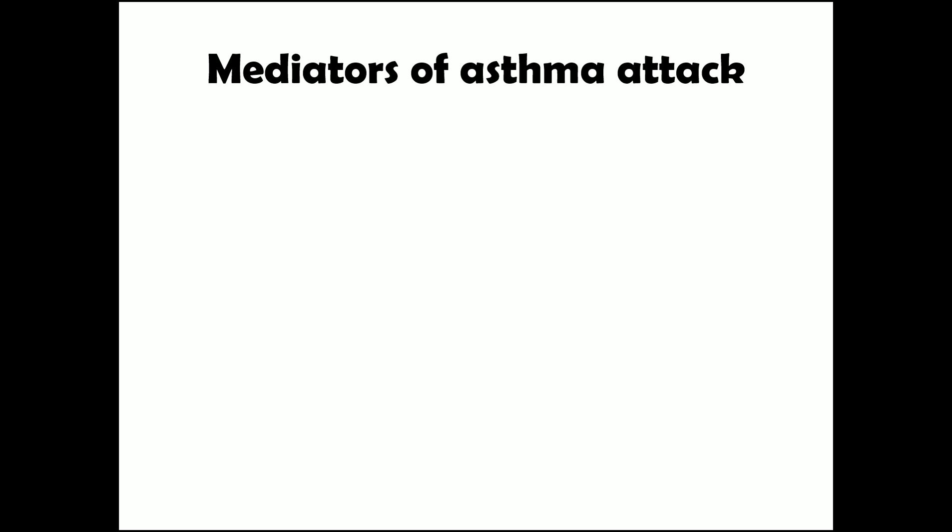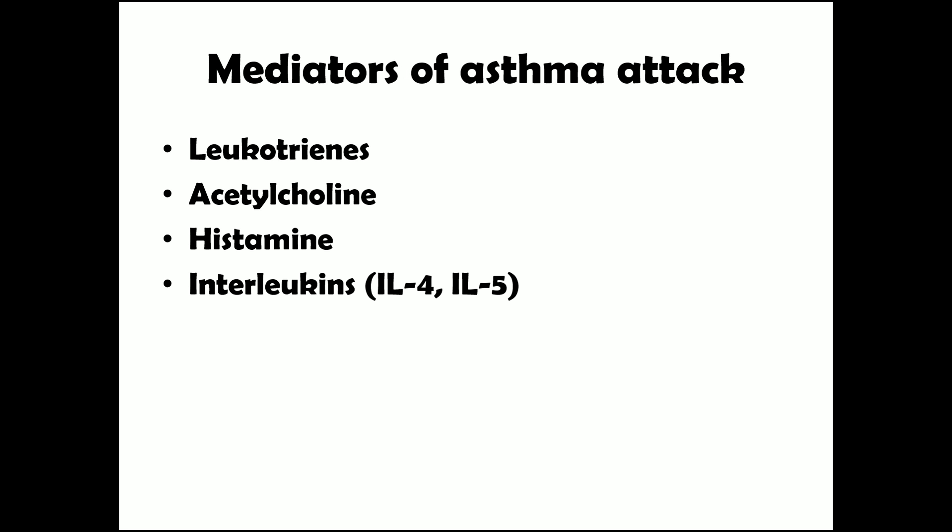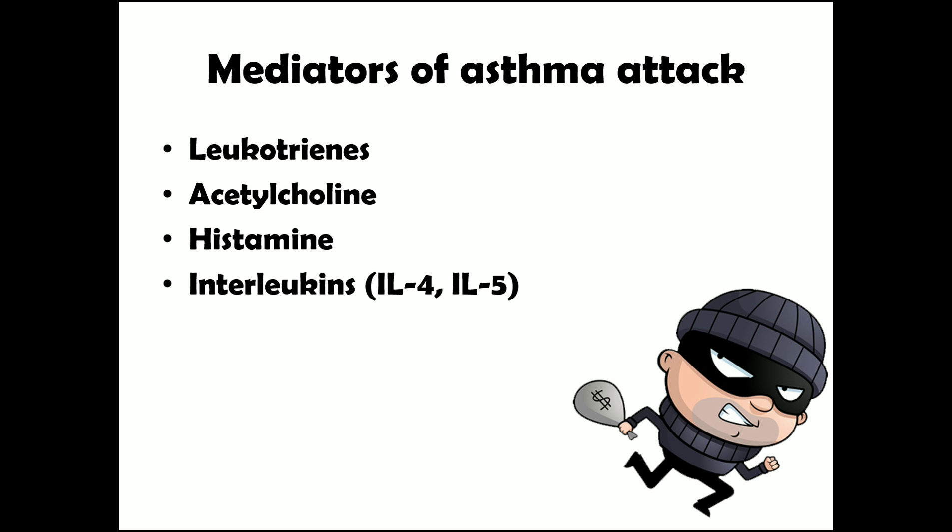There are various mediators of an asthma attack, including leukotrienes, acetylcholine, histamine, and interleukins — mainly IL-4 and IL-5. Other mediators include platelet activating factor and many others involved in an acute asthma attack. Since asthma involves so many mediators, they are collectively known as the 'mediator soup,' as classically described in the textbook.